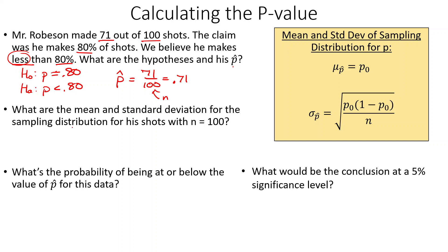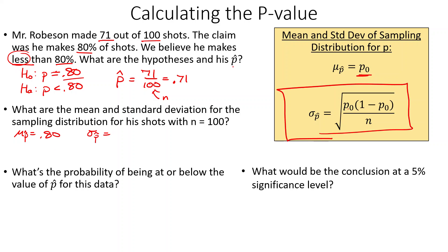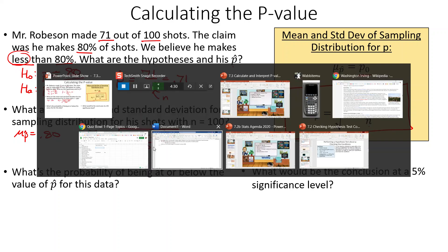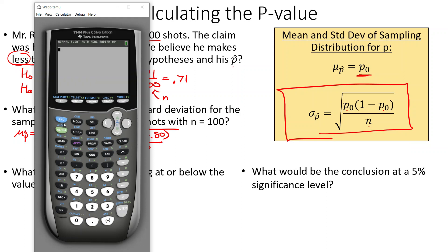Next, what are the mean and standard deviation for this sampling distribution with n equals 100? The mean of the sampling distribution is the null hypothesis value — 80%, or 0.80. The standard deviation is the square root of p-naught times (1 minus p-naught) divided by n — so square root of 0.80 times 0.20 divided by 100. We throw that into our calculator and get 0.04.